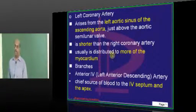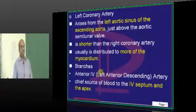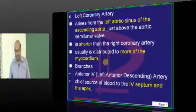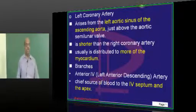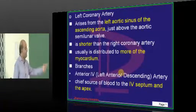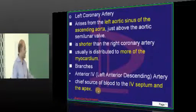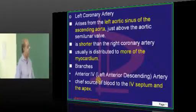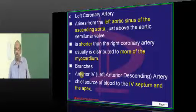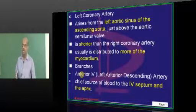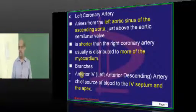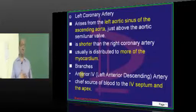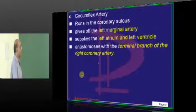The left coronary artery originates from the left aortic sinus of the ascending aorta. It is shorter than the right coronary artery, yet it supplies more myocardium. Its branch, the anterior interventricular artery — also called the left anterior descending artery — is the main supply of blood to the interventricular septum and the apex of the heart. The left anterior descending artery is also called the widow's artery, as it is a very common cause of sudden cardiac death — ventricular fibrillation — in older men.